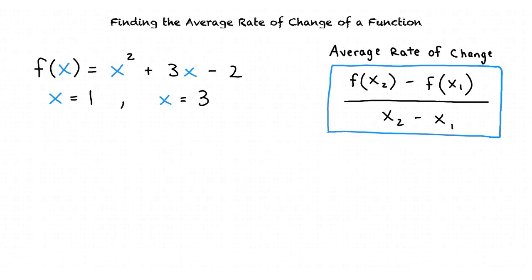Wait — where do x2 and x1 come from? The only x's I see are x equals 1 and x equals 3. The reason we use x1 and x2 is so that we can tell the difference between our two x values. In our problem, let's call x equals 1 as x1, and x equals 3 as x2.